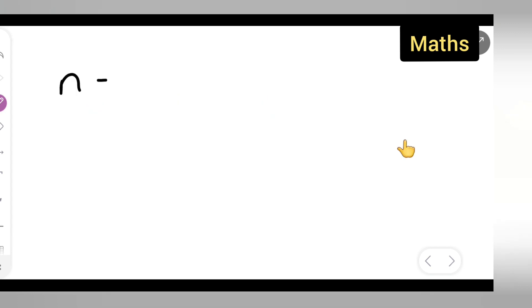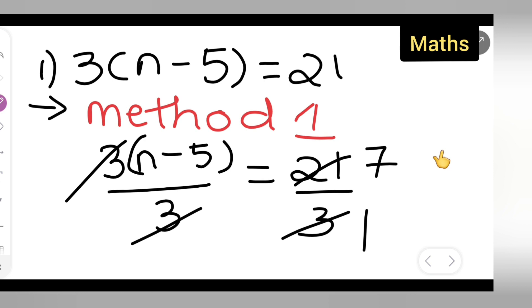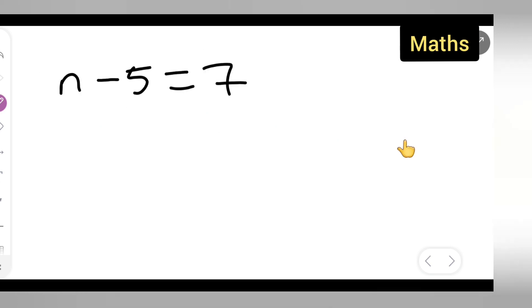n minus 5 is equal to 7. n is equal to 7 plus 5 will give you n is equal to 12. So this is one method to find the value of n.